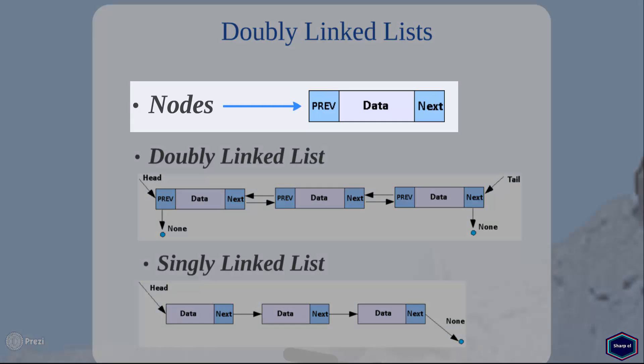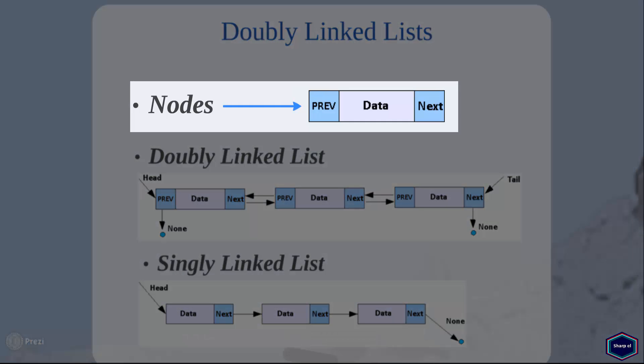Every node in a doubly linked list contains three fields: data, next, and previous. The data field is used to store the actual value of that node, and it can be any built-in or user-defined data type. The next field is used to store the address of the next node in the sequence, whereas the previous field is used to store the address of the previous node in the sequence.